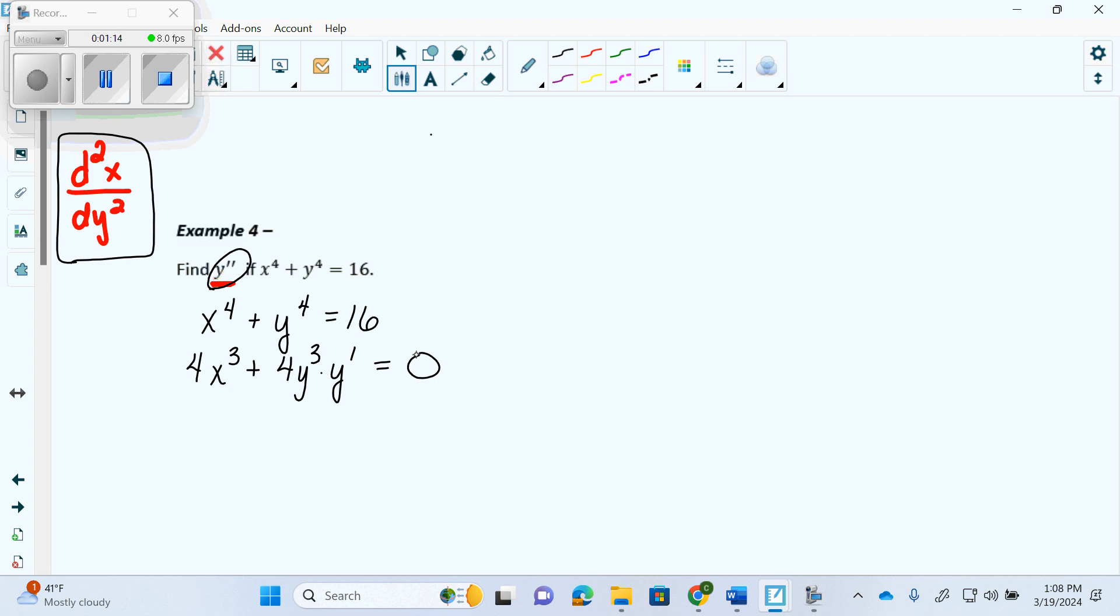Okay? So once again we need to do the y prime by itself. So we're going to subtract 4x cubed from both sides. And then we get 4y cubed times y prime equals negative 4x cubed.